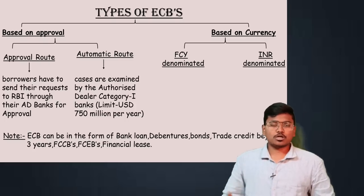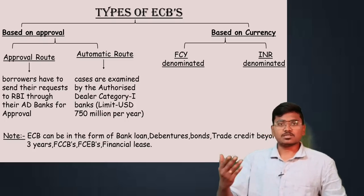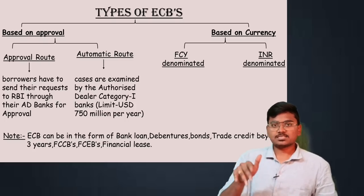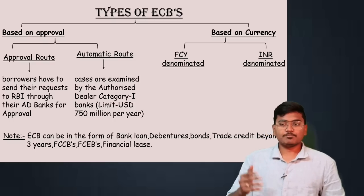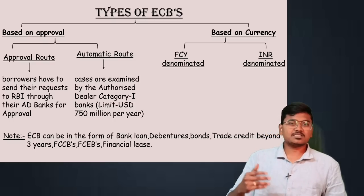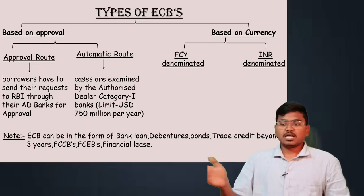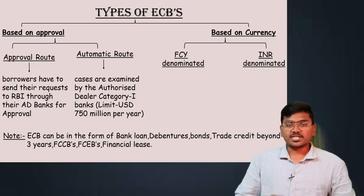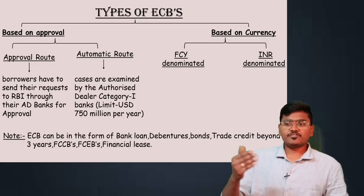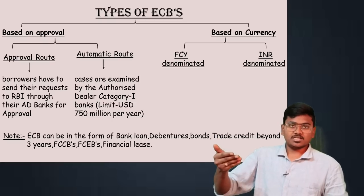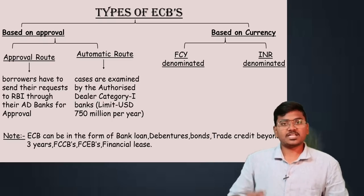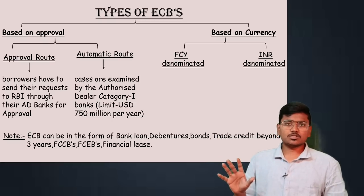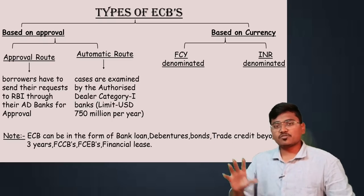Even ECB can be taken in the form of finance lease. There are five types of conditions under which something qualifies as finance lease; if those conditions are satisfied, then that will be finance lease, otherwise it will be operating lease. These are the various forms of ECBs.